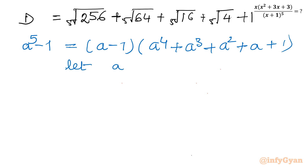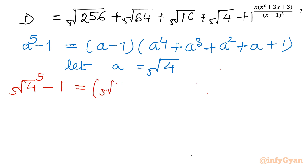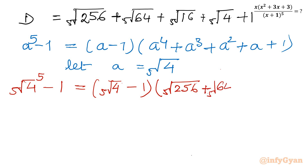Now let us substitute a equal to 5th root of 4. So on the left-hand side it is (5th root of 4)⁵ - 1. The right-hand side will be (5th root of 4 - 1) times: a⁴ gives 5th root of 256, a³ gives 5th root of 64, a² gives 5th root of 16, then 5th root of 4, and the last term is plus 1. You can see easily this second bracket is our denominator.